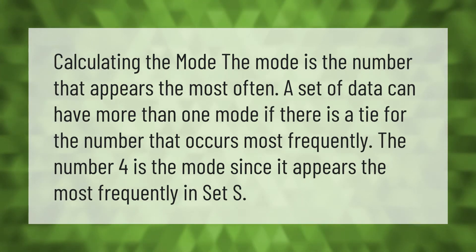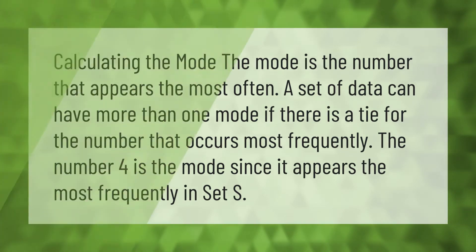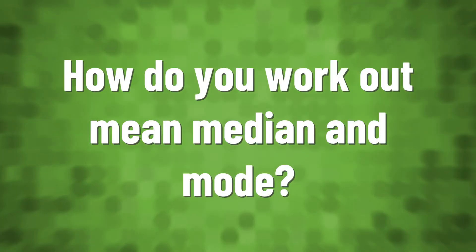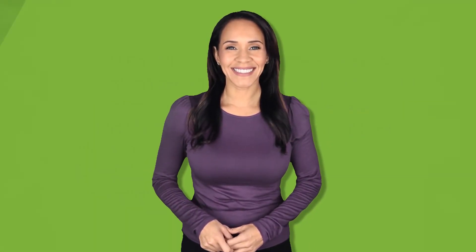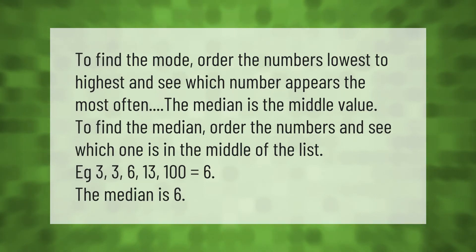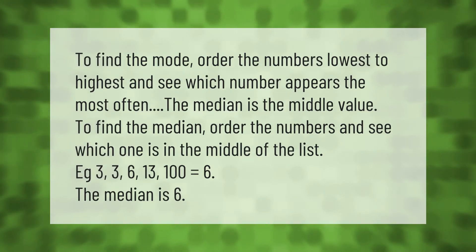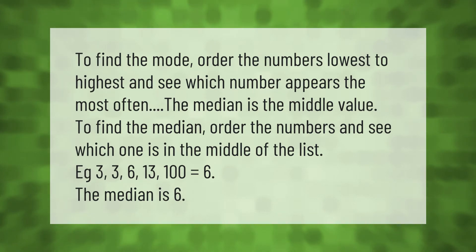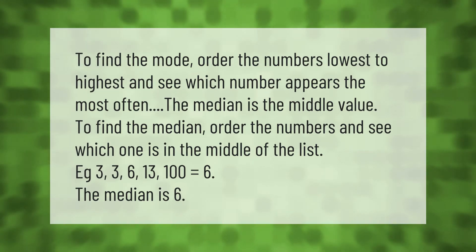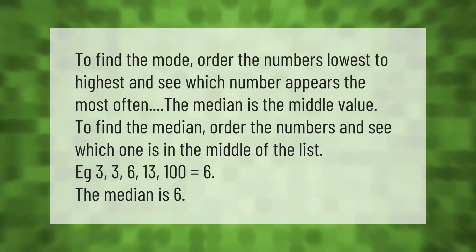To find the mode, order the numbers lowest to highest and see which number appears the most often. The median is the middle value. To find the median, order the numbers and see which one is in the middle of the list.